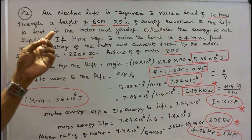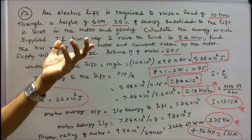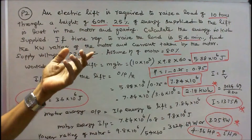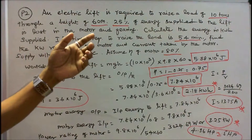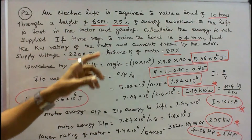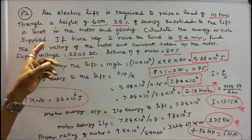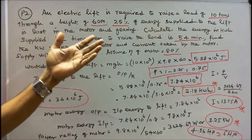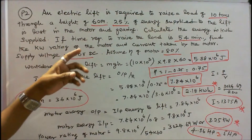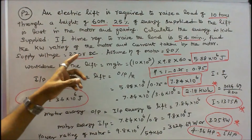Problem 2: An electric lift is required to raise a load of 10 tons, that is 10,000 kg, through a height of 60 meters. 25% of energy supplied to the lift is lost in the motor and gearing. Calculate the energy in kWh supplied. If time required to raise the load is 54 minutes, find the kW rating of the motor and current taken. Supply voltage is 220 V DC.